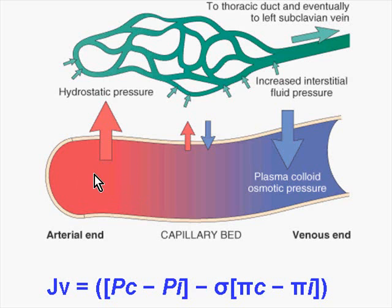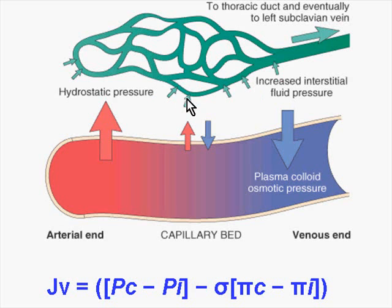On the arterial end, we have a high hydrostatic pressure, which manifests itself as forcing fluid out as you get towards the capillary bed. That fluid, which is then out in the intercellular space, gets picked up through thin-walled blood vessels with action forcing the fluid back through the lymphatic system, through lymph nodes.